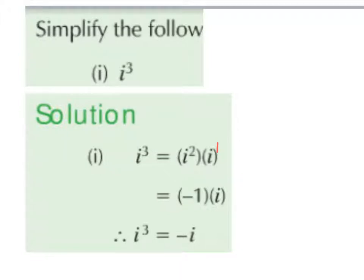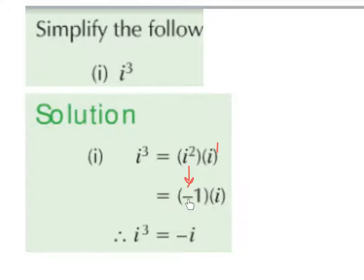We know that i squared gives us minus 1 — that you have to learn off by heart. And i to the power of 1 is just i. So minus 1 times i is minus 1i, or minus i. Therefore, i cubed gives us minus i.